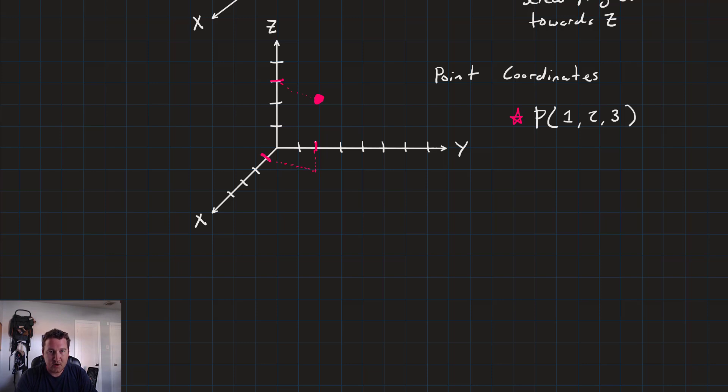So, this just references the point on the individual axes. Oftentimes, it's referred to as sort of the intersection between the planes of x and y and z at those points. Let's look at one more point just as an example.